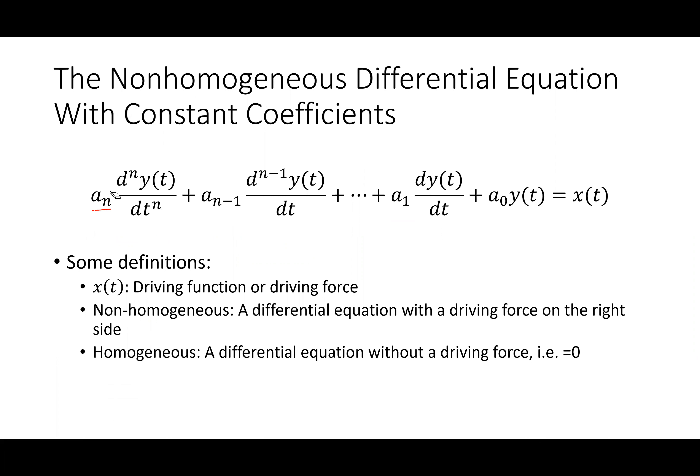The coefficients a_n through a_1 can equal zero — in fact, in the homework for the undamped solution where it's just a sinusoidal response, a_1 must be zero because the first-order term represents loss. They can never be negative. If you're in 2112 and you get negative coefficients, you've written a bad differential equation.